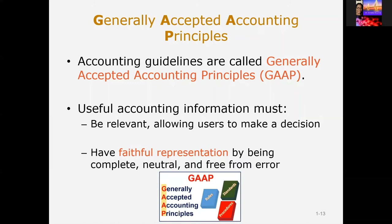The primary objective of financial reporting is to provide useful information. In order for information to be useful, it must be relevant and have faithful representation. Relevant information allows the user to make informed decisions. Information is faithfully representative when it is complete, neutral, and free from error.